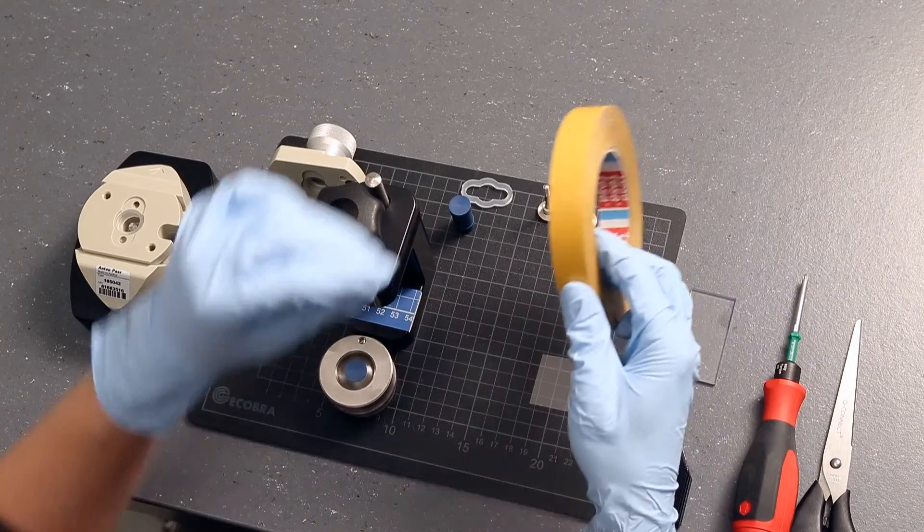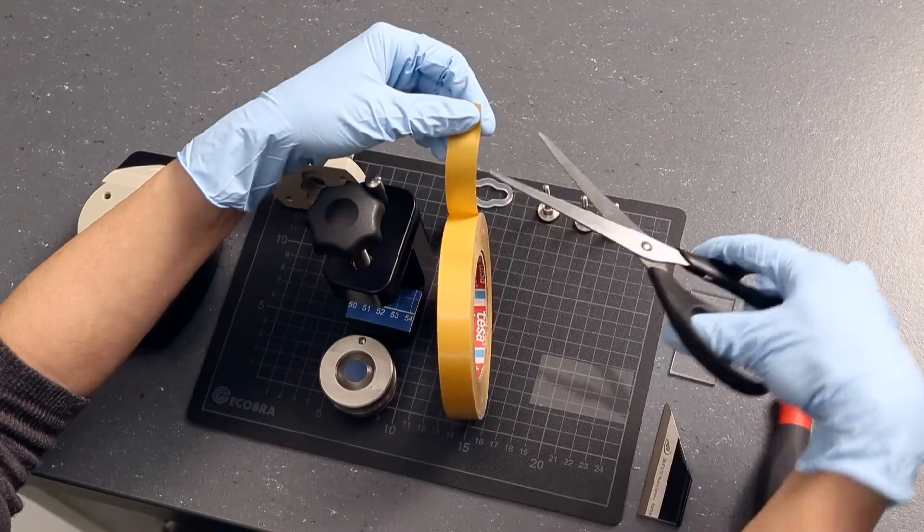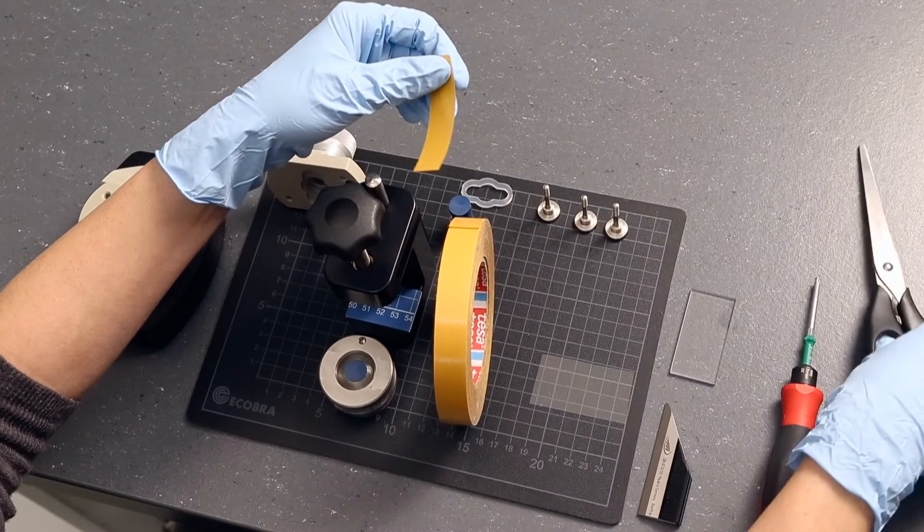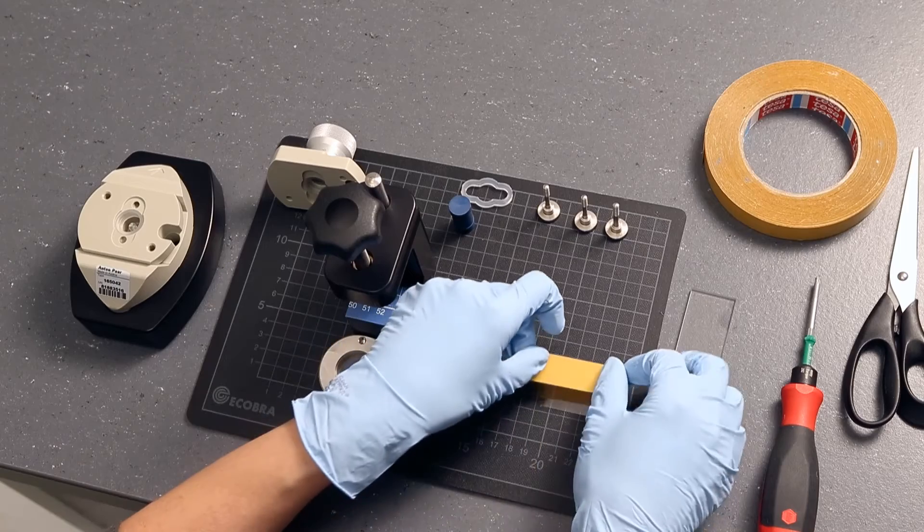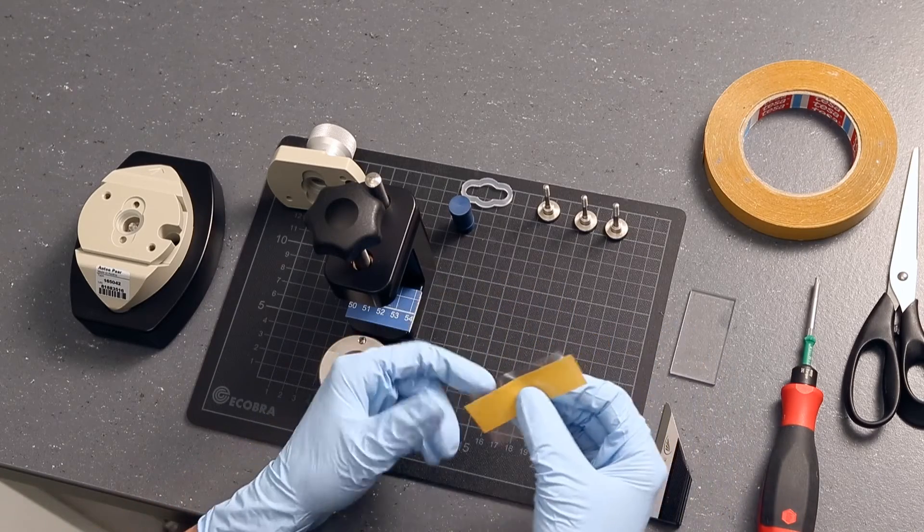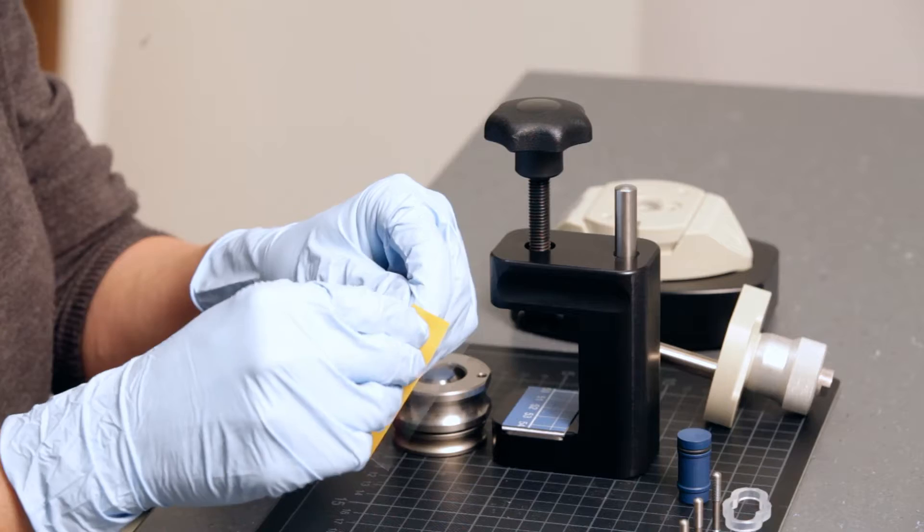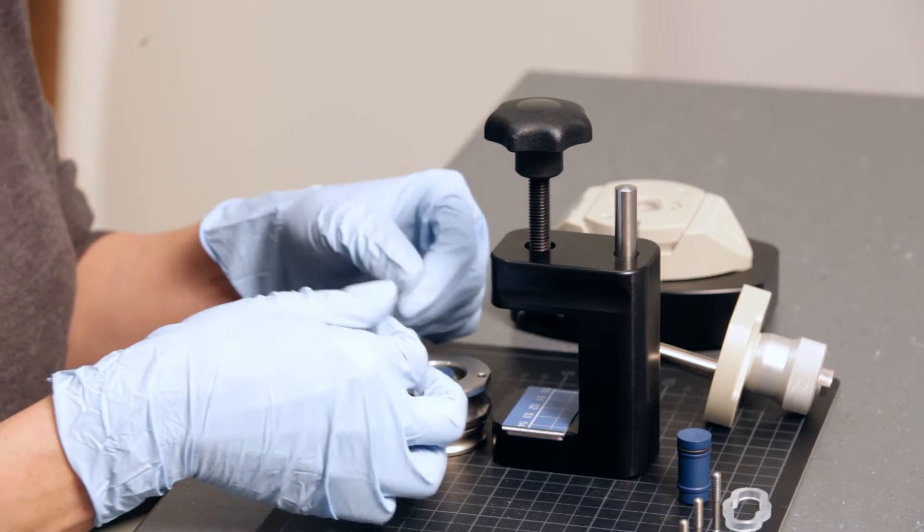Cut out a suitably sized piece of adhesive tape and place it on the backside of the polymer foil. Now use the puncher. Peel off the protective cover and stick the tape onto the sample holder.